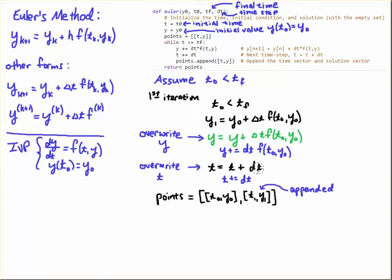Then we have 'points dot append' - points is an object that has a method called append. Notice that we just overwrote the t and y, so here they were the initial values, now we overwrote them with the next iterates. We're going to append our list with that now current value of t and y. So this is t1 and y1, and the append says okay, your points - we're gonna append the list and put the t1, y1 next in the list.